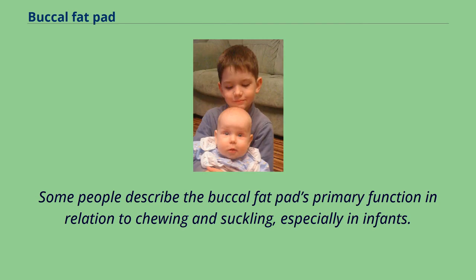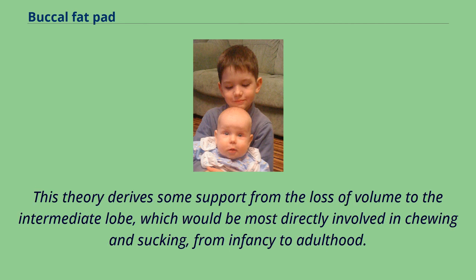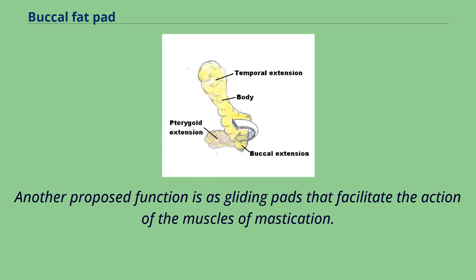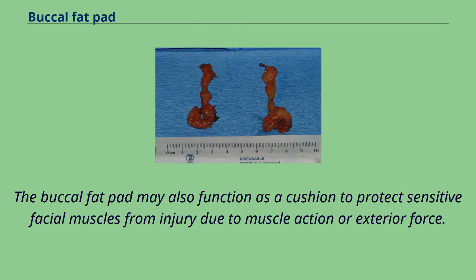Some people describe the buccal fat pad's primary function in relation to chewing and suckling, especially in infants. This theory derives some support from the loss of volume to the intermediate lobe, which would be most directly involved in chewing and sucking, from infancy to adulthood. Another proposed function is as gliding pads that facilitate the action of the muscles of mastication. The buccal fat pad may also function as a cushion to protect sensitive facial muscles from injury due to muscle action or exterior force.